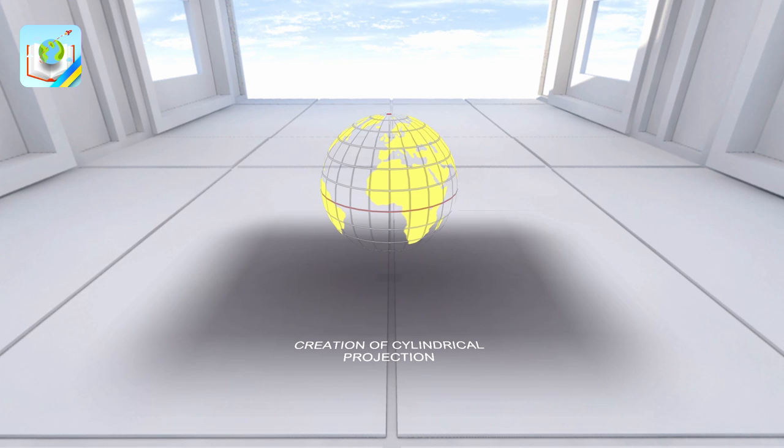In order to minimize distortions on the map, various cartographic projections are used: cylindrical, conical, and azimuthal.